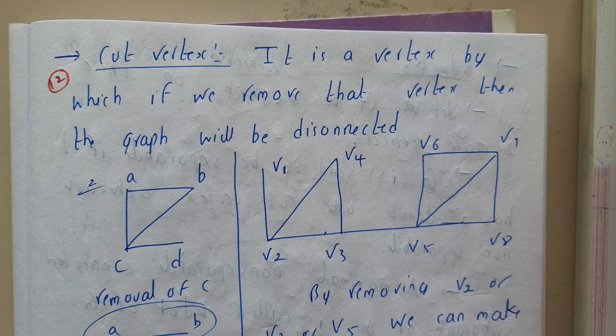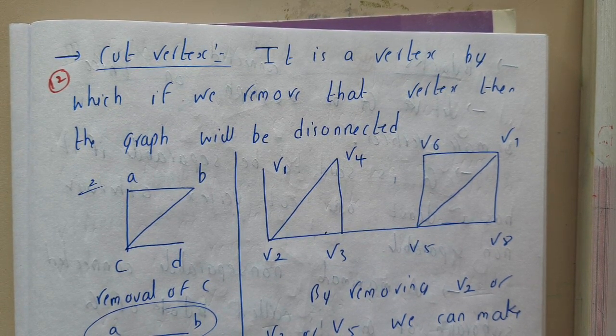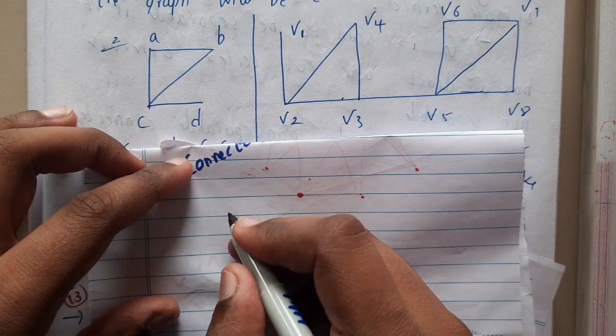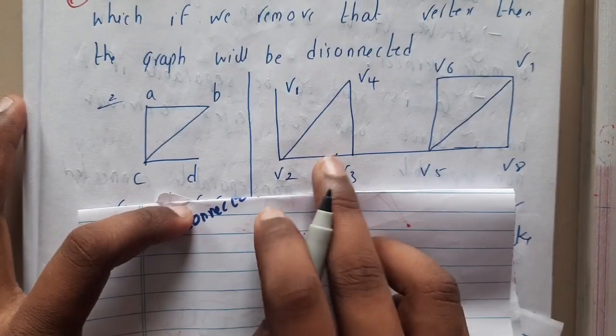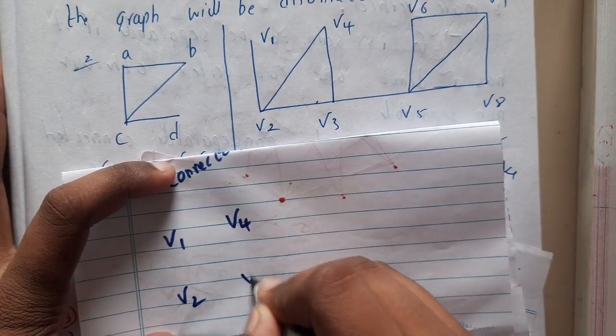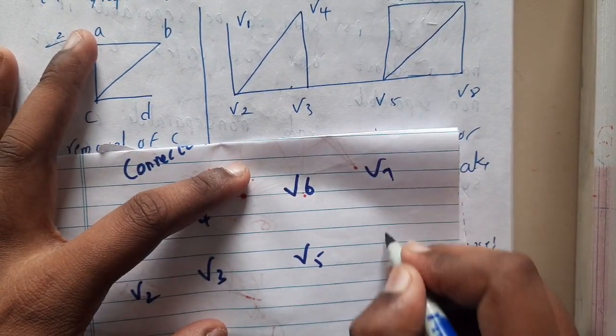A simple example or simple identification for this topic will be about disconnected and connected graphs. So whenever you cut a particular vertex, if you observe here - let me draw the same diagram. Just give me a second: v5, v6, v7, and v8.